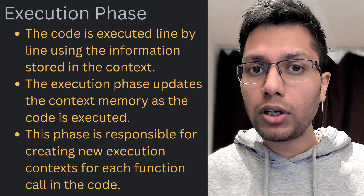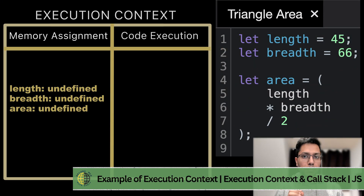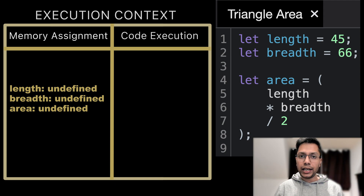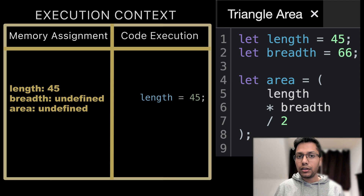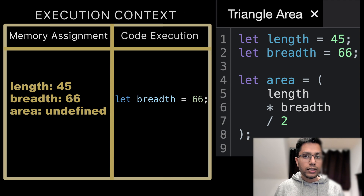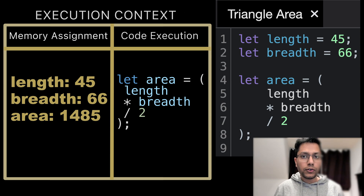It is also responsible for creating new execution contexts for each function call. Let's visualize the execution context using a simple example calculating the area of a triangle using its length and breadth. In the memory assignment phase, length, breadth, and area are all set to undefined. In the execution phase, each line of code is executed one after the other and after each assignment the memory is updated. After code execution is complete, the execution context is removed and memory is cleared.